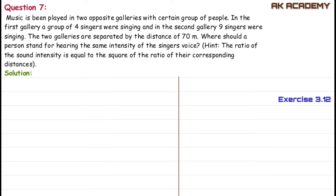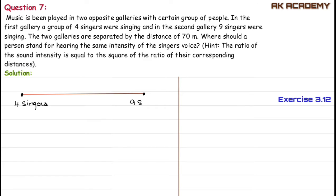In one opposite gallery, on this side there are 4 singers, and on the other side of the gallery there are 9 singers. The total distance between the two galleries is 70 meters.